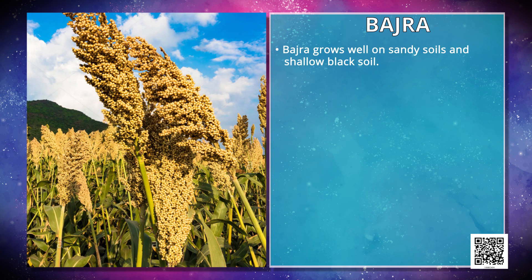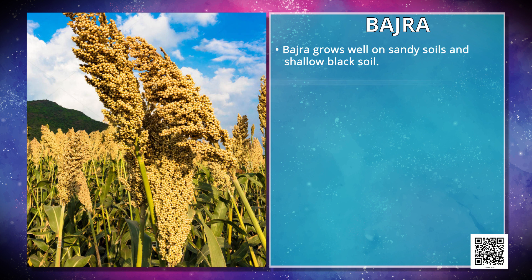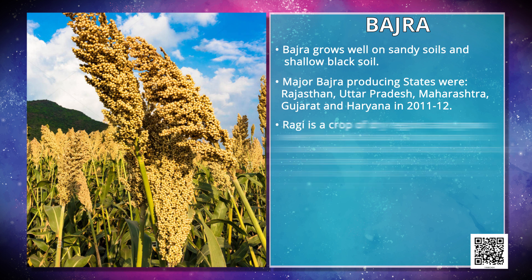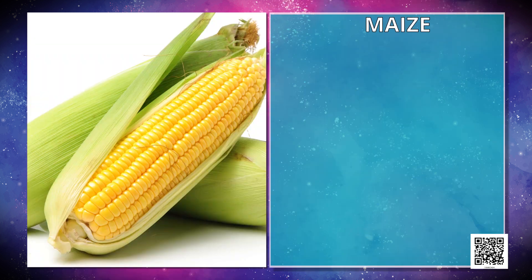Bajra grows well on sandy soils and shallow black soil. Major bajra-producing states are Rajasthan, Uttar Pradesh and Maharashtra. Ragi is a crop of dry regions and grows well on red, black, sandy, loamy and shallow black soils. Major ragi-producing states are Karnataka, Tamil Nadu, Himachal Pradesh, Uttarakhand, Sikkim, Jharkhand and Arunachal Pradesh.